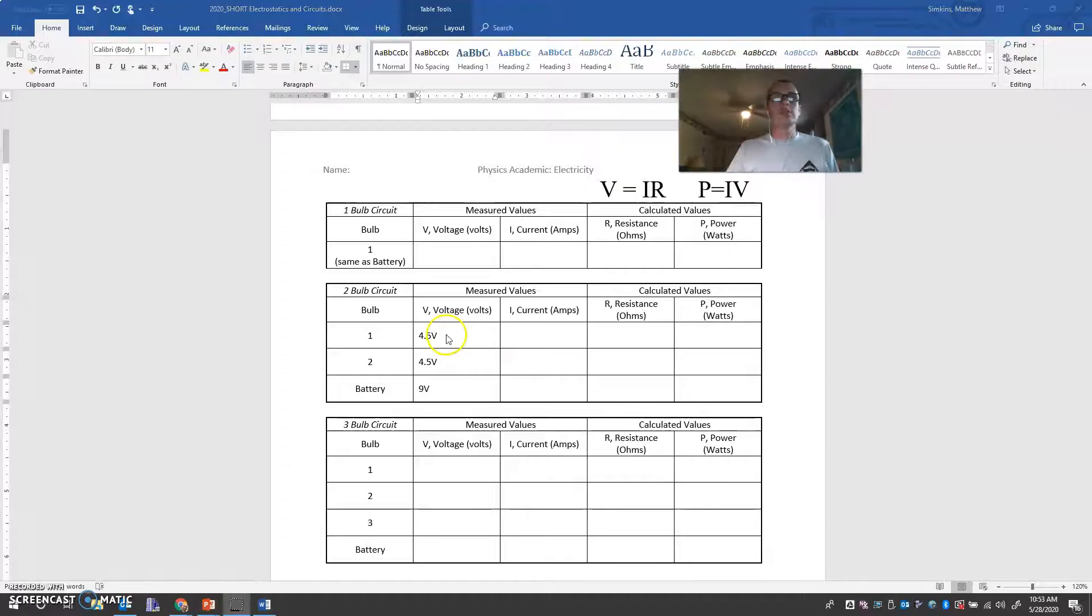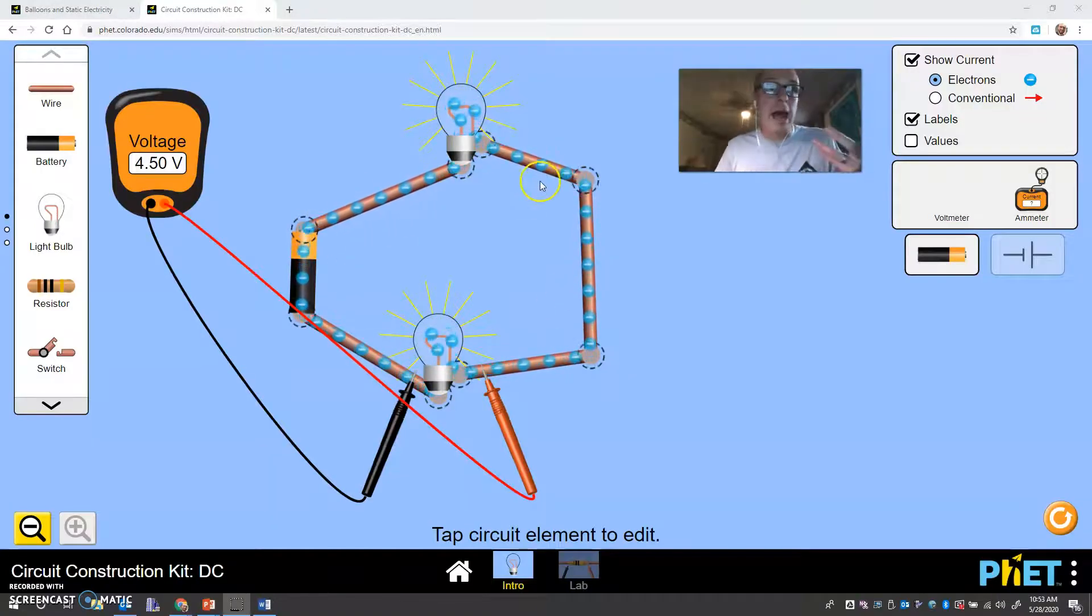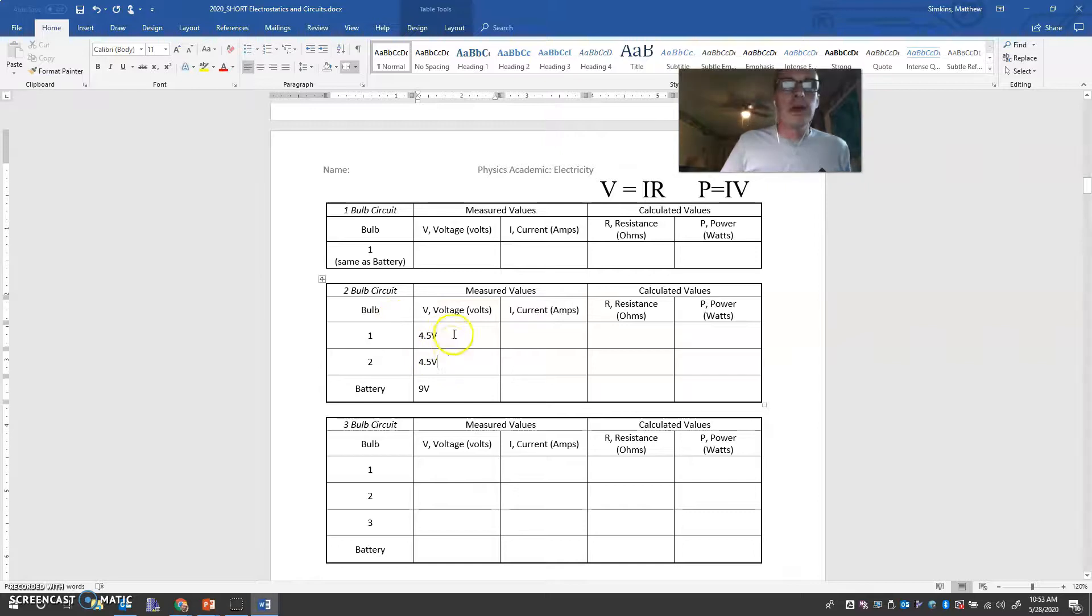So I'm actually giving you the answers here for the second one. Now, you'll notice what happens here is if you have these two bulbs connected in a single path, we'll find out later, this is called a series circuit. But if you have these two bulbs connected in a single path, the voltage of the one bulb plus the voltage of the other bulb has to add up to the total voltage. And we see that works here. We see four and a half plus four and a half equals nine. Pretty sweet.